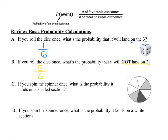Now let's look at the spinner. Suppose we spin this spinner one time. What is the probability that it lands on a shaded section? First, we need to count how many total sections are on the spinner — there are 7 sections. There are 3 sections that are shaded either dark gray or light gray, so that's 3 out of 7. Now if we spin the spinner once, what is the probability that it lands on a white section? There are 7 total sections, and 4 of those are white, so there's a 4 out of 7 probability.